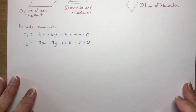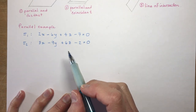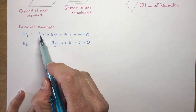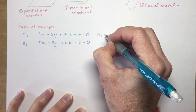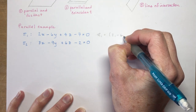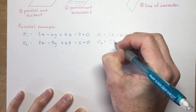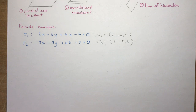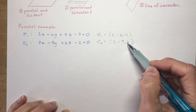Every time you find the intersection of two planes, the first thing you want to do is check what the normals are. To find the normals, all you have to do is check the coefficients of x, y, and z. So normal one is going to be (2, -6, 4) and normal two is going to be (3, -9, 6). The question is: are these scalar multiples of one another?